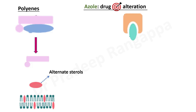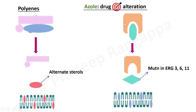How does azole resistance happen? Azole resistance happens through two or three mechanisms. One is drug target alteration. The yellow or orange one represents the azoles. They bind to ergosterol, but there is a mutation in the ergosterol — the yellow ones — which changes the morphology of the ergosterols. Mutations have been found in ergosterols 3, 6, and 11. Because of the change in morphology of ergosterol, the azoles fail to bind to the ergosterol and antifungal action does not happen effectively. This is called drug target alteration.